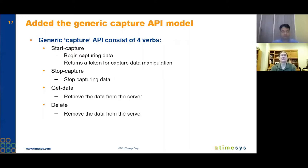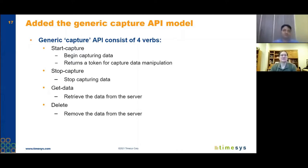Related to the resource model is what I call the generic capture API model. We wanted an abstraction that can be used for lots of different resource types — the equivalent of the file in Unix. In the REST API, everything is a capture. The basic verbs are: start capture, stop capture, get data, and delete. These are used for any resource where you're doing data collection.